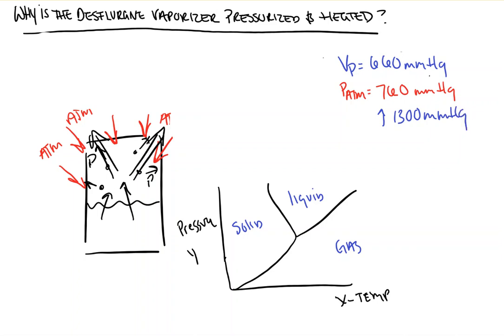This way, at room temperature, desflurane, which would be here, moves up into here. We'll say point A to point B, because we've increased the pressure so much that we were able to kind of squish all of the desflurane molecules down into a liquid form.